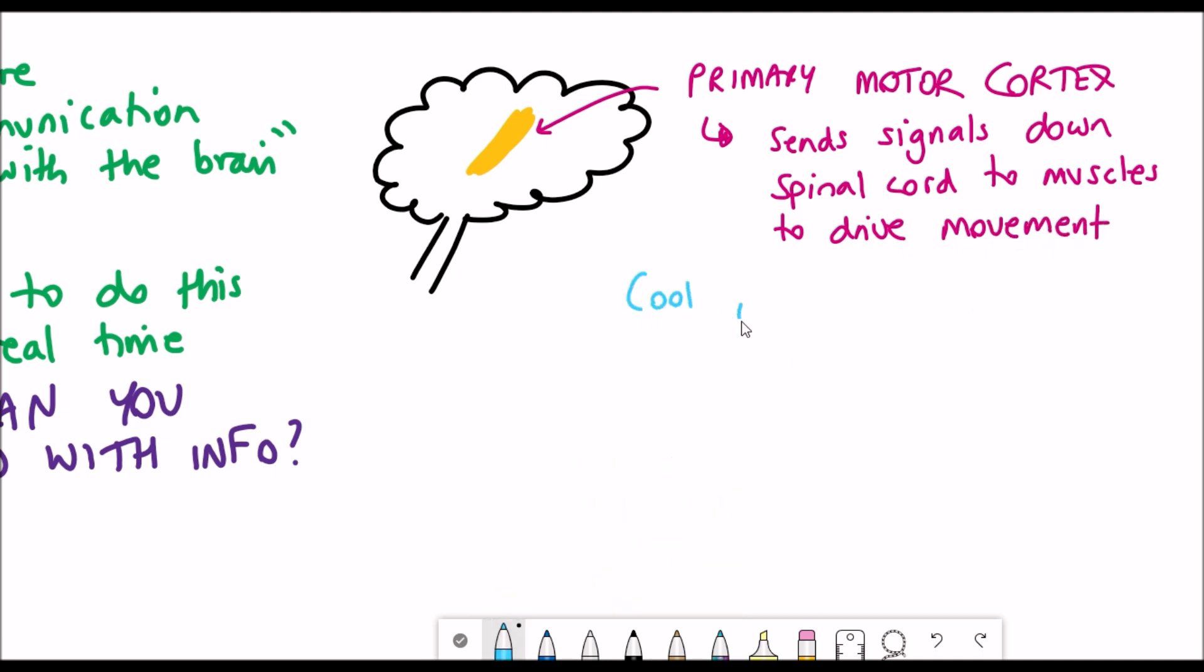But the cool thing is even just thinking of movement stimulates a similar response to actually performing the movement. The way that I understand this is that if you have a patient with paralysis and they think about movement you could use these sensors to detect that information.